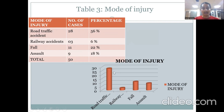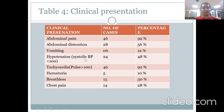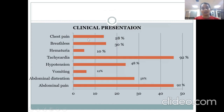The clinical presentations considered were abdominal pain, abdominal distension, vomiting, hypotension (systolic BP less than 100), tachycardia (pulse more than 100), hematuria, breathlessness, and chest pain. The maximum number of cases presented with abdominal pain and tachycardia, followed by abdominal distension and hypotension.